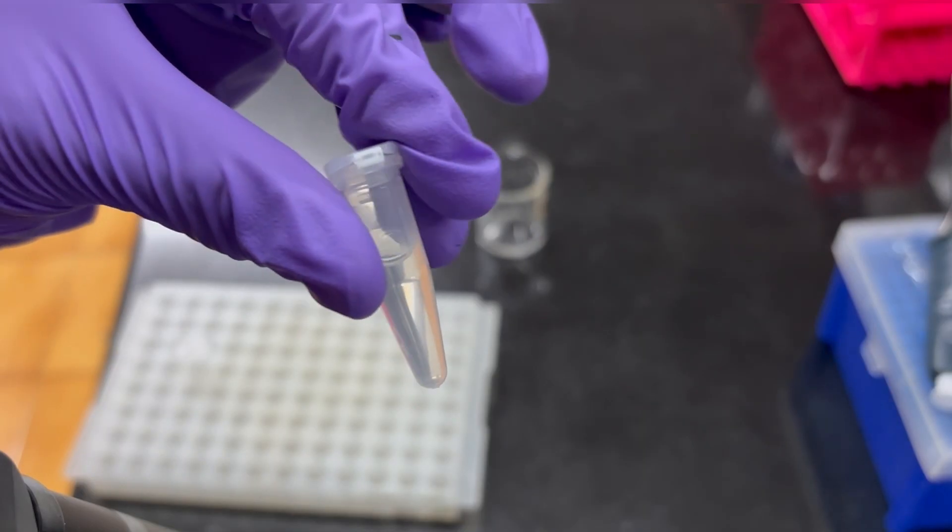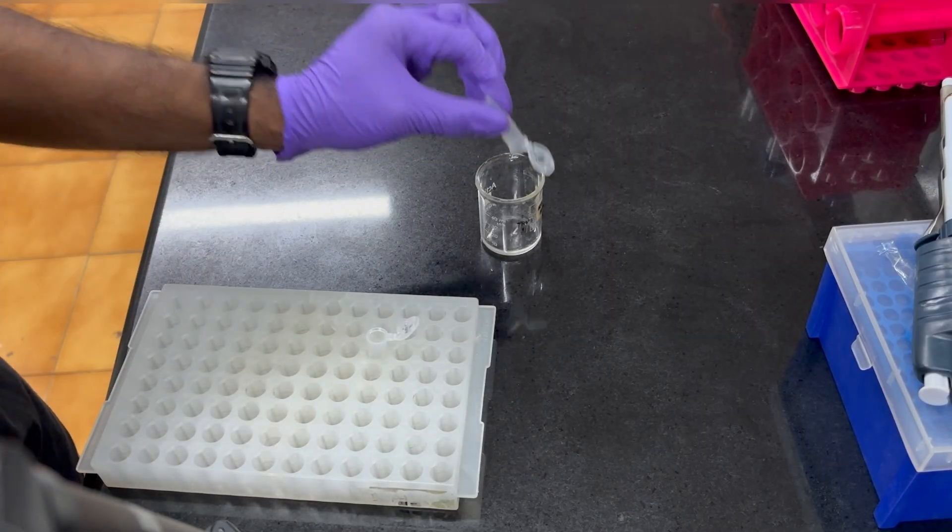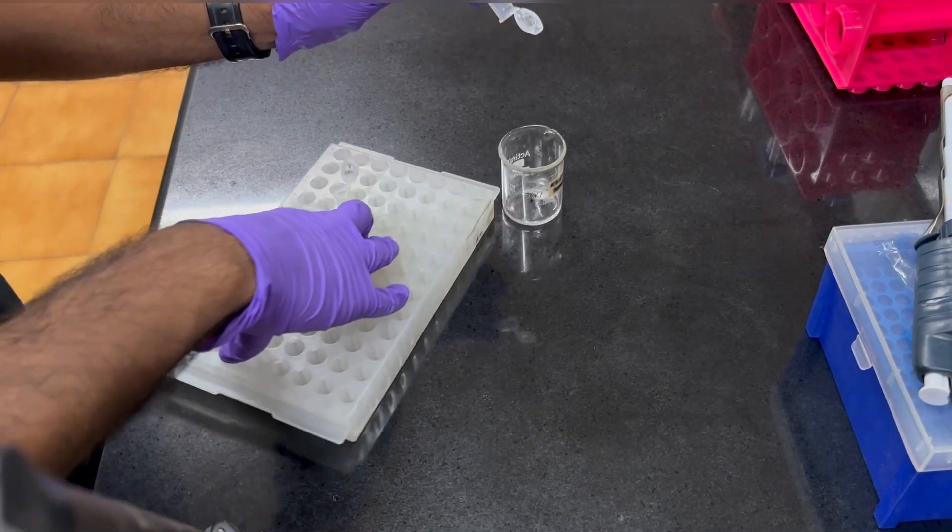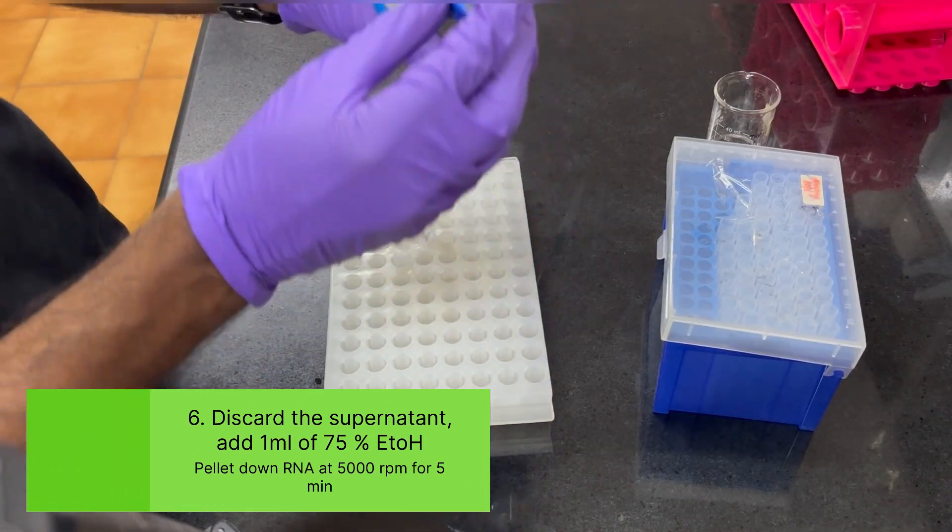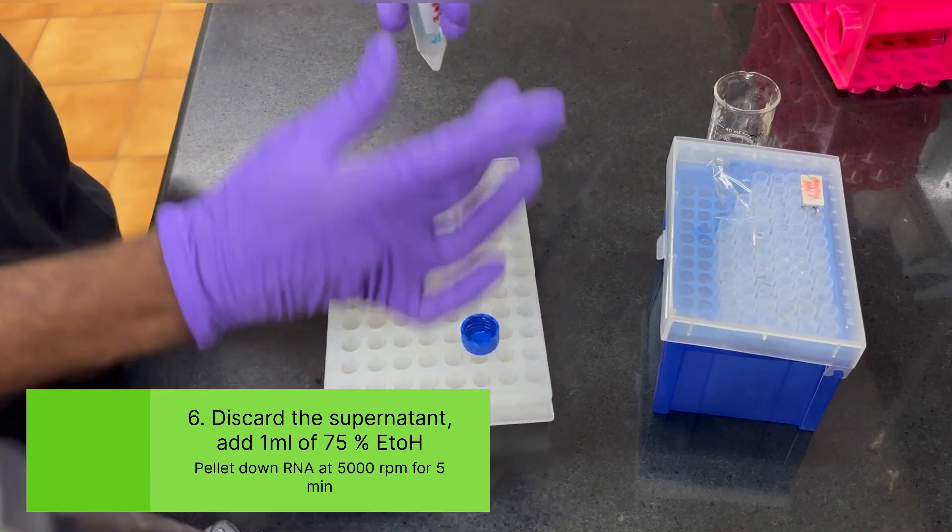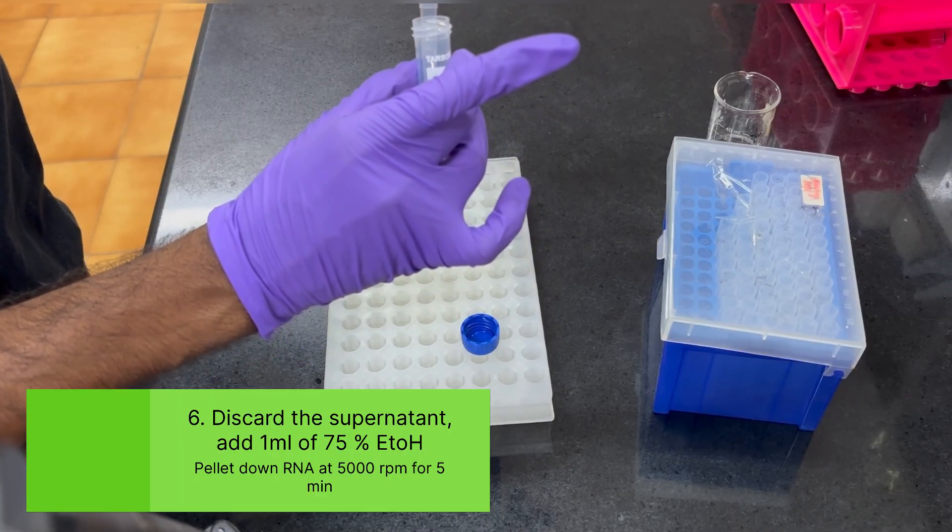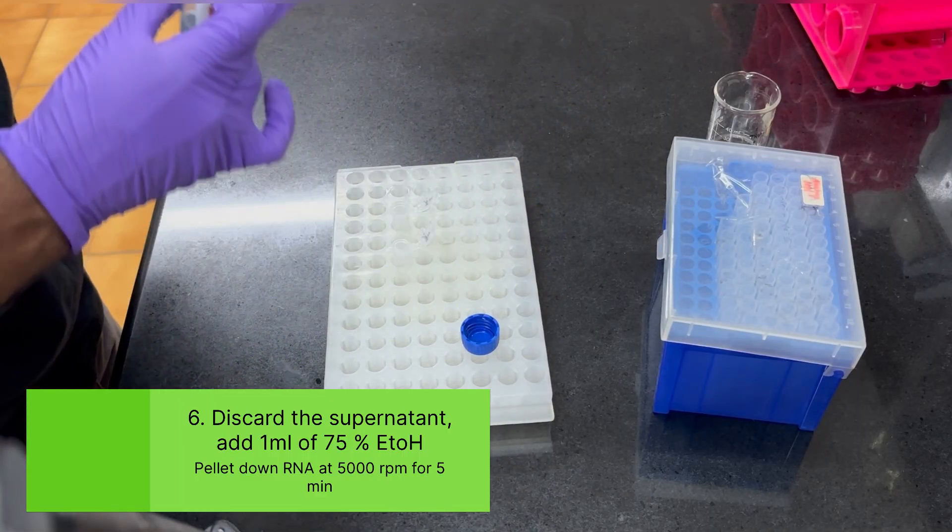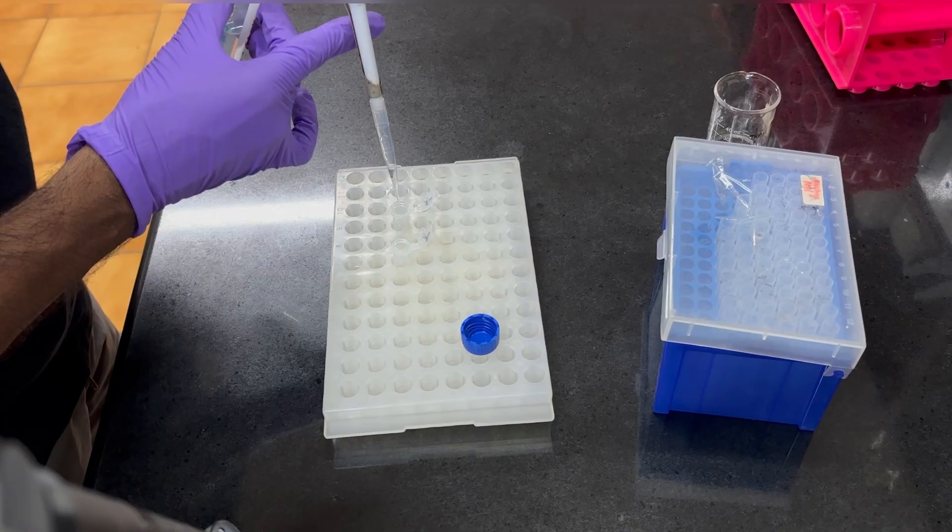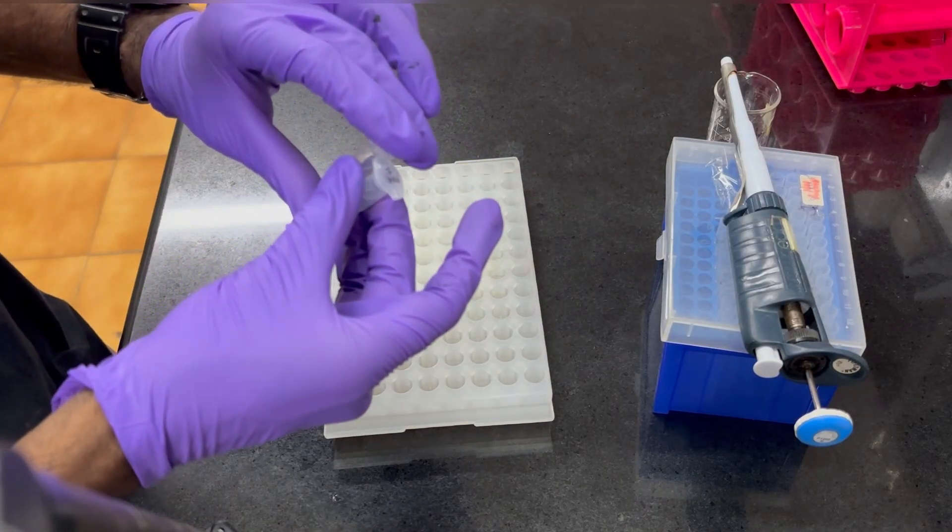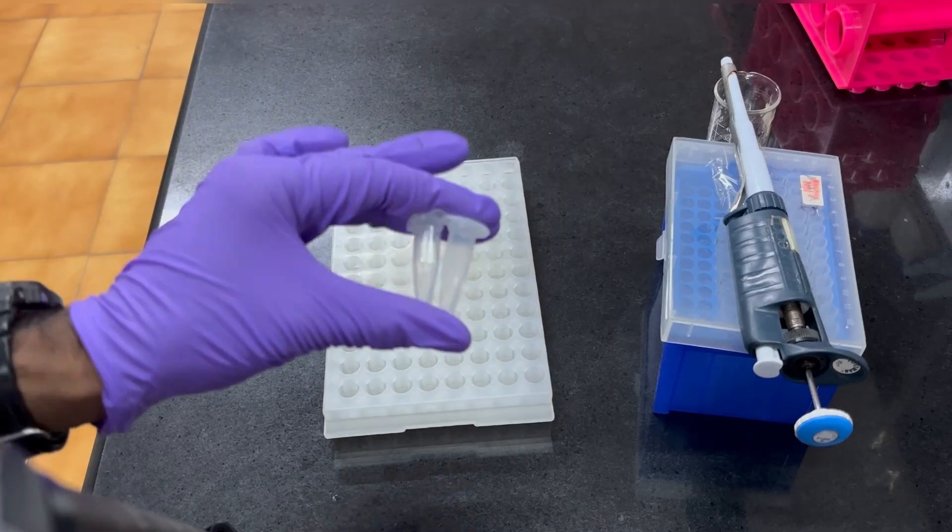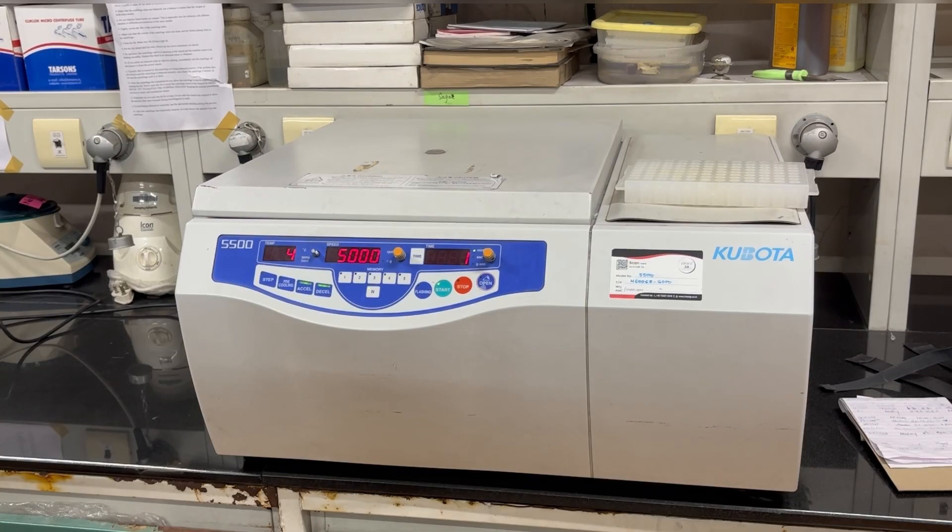Then observe for the pellet. If pellet is not there, then don't worry. Discard the supernatant and whatever pellet if you are seeing, it's okay. Otherwise you add 1 ml of 75 percent ethanol that we have prepared in DEPC water. So make sure you have prepared it in DEPC water. Then after adding ethanol, just dissolve the pellet into the 75 percent ethanol, then centrifuge at 5000 rpm for four minutes.